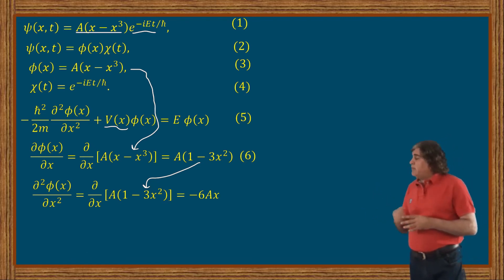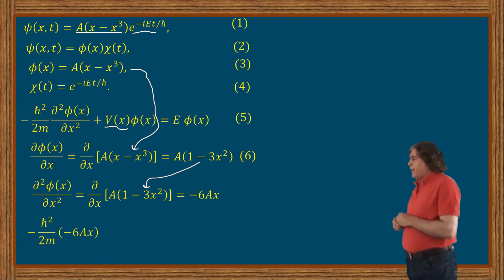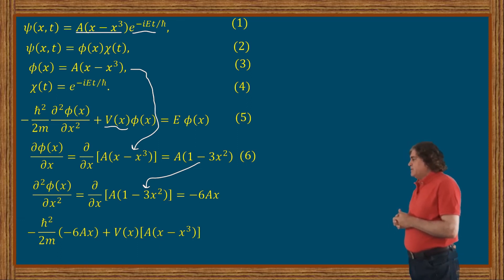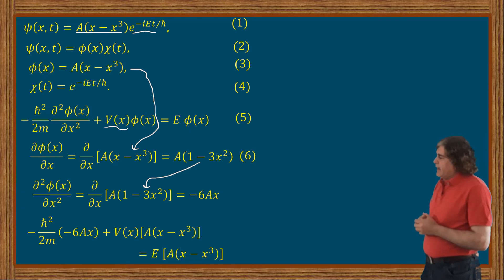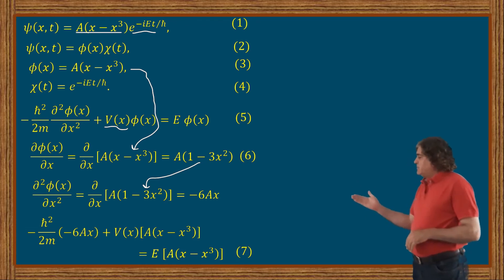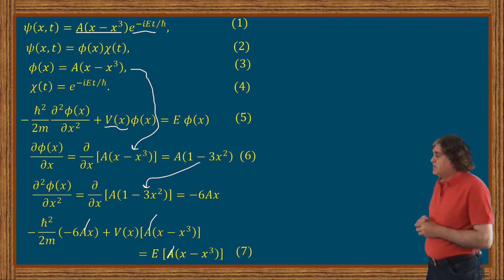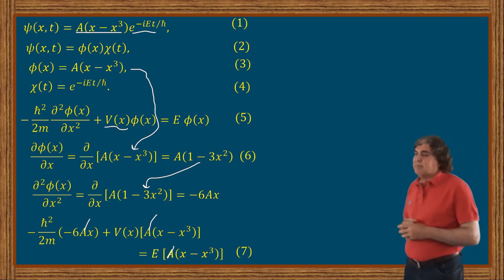Putting the values from equation 3 and equation 6 into equation 5, we can write the result as: −(ℏ²/2m)(−6Ax) + V(x)·A(x − x³) = E·A(x − x³). We see that every term in this equation carries the normalization constant A, and we can cancel that out from equation 7. This must be so because the potential in the Schrödinger wave equation has nothing to do with the normalization constant of the wave function.